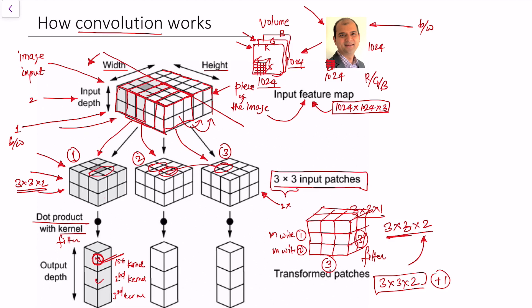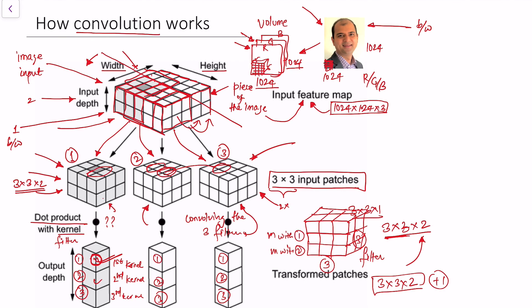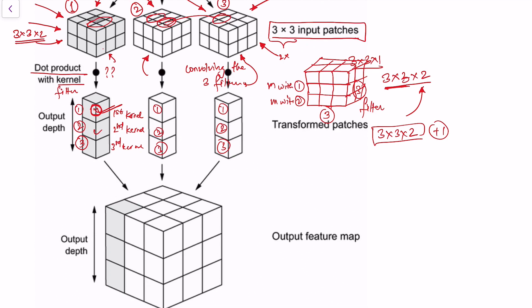Depending on how many filters you apply to an input patch, you get that many output values. For example, with 3 filters we get 3 values for patch 1. We apply the same 3 filters to patch 2 and get 3 values, and to patch 3 to get 3 more values. These values are the result of convolving the 3 filters to each input patch. When we say 'convolve,' we mean applying the filter to the entire input feature map.